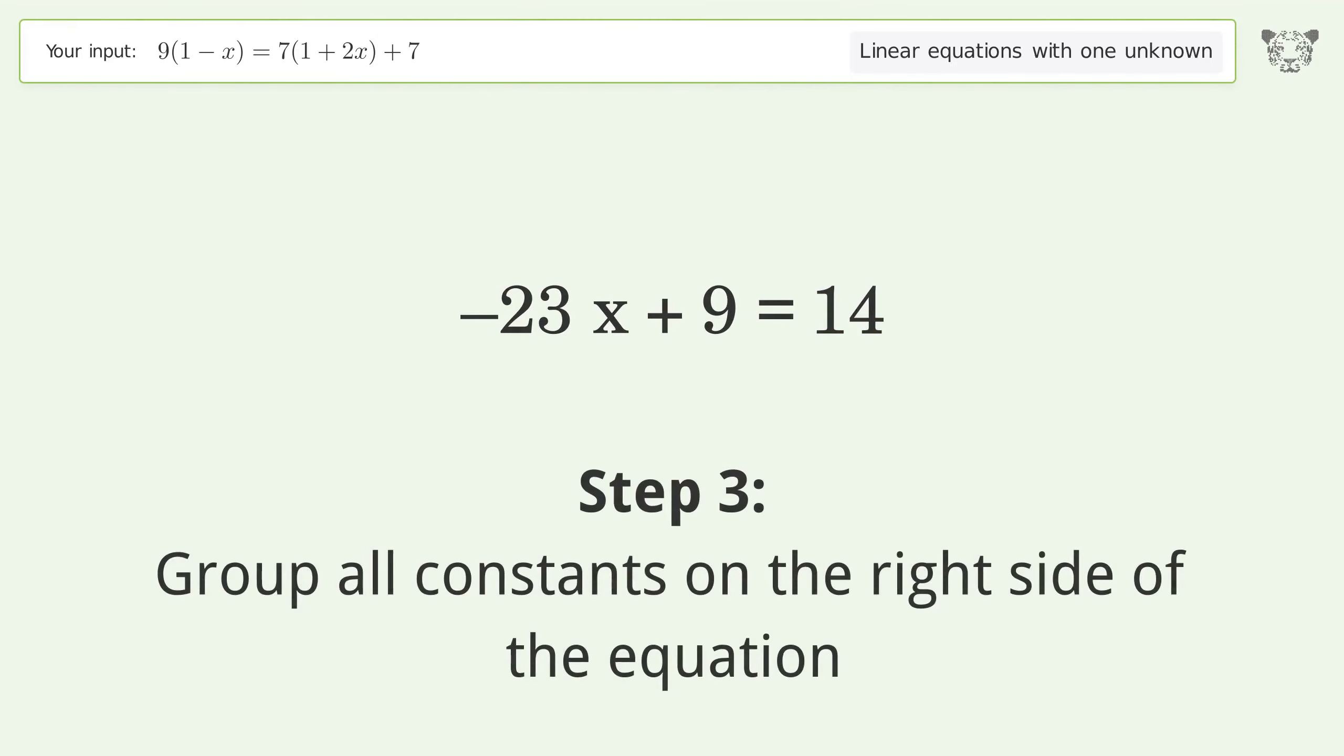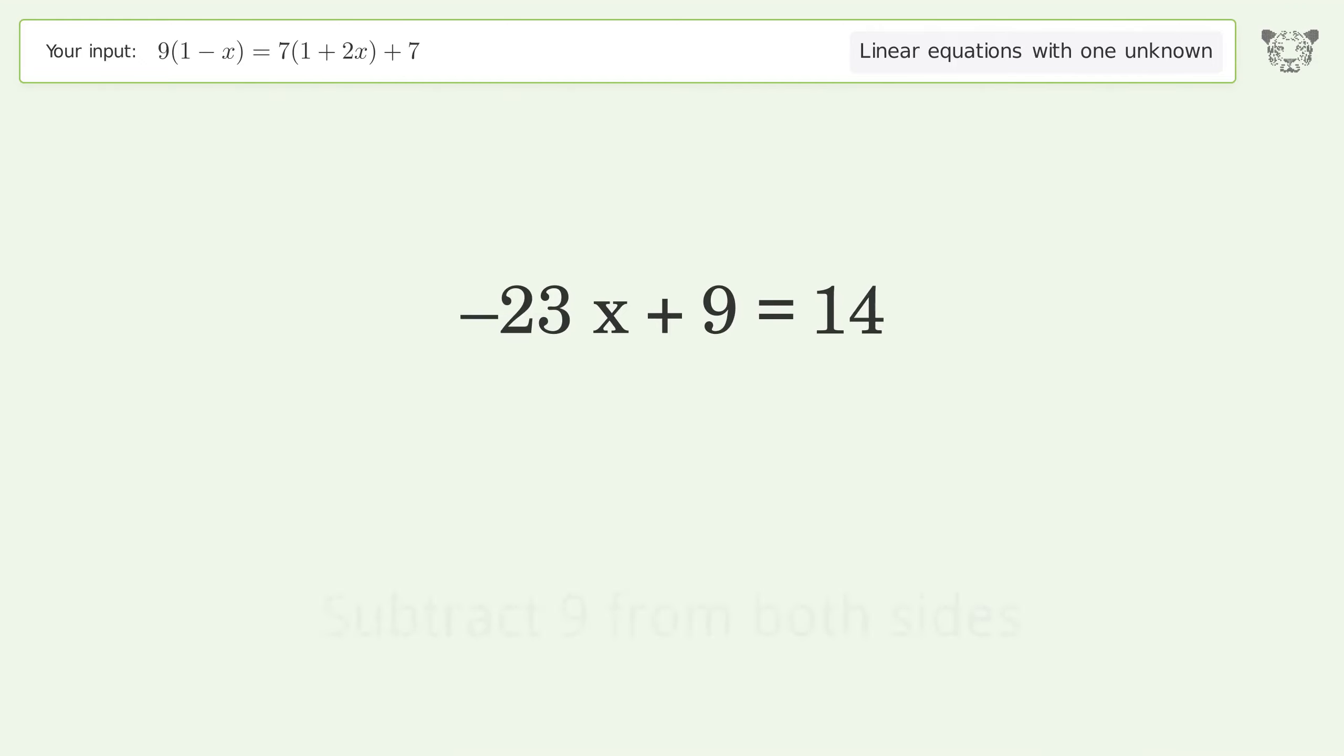Group all constants on the right side of the equation. Subtract 9 from both sides. Simplify the arithmetic.